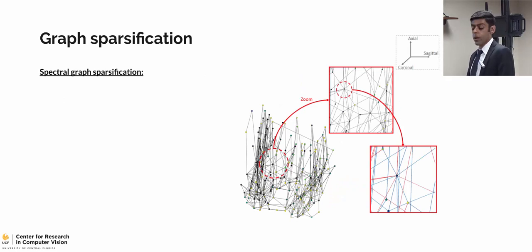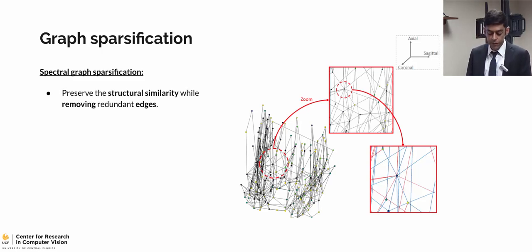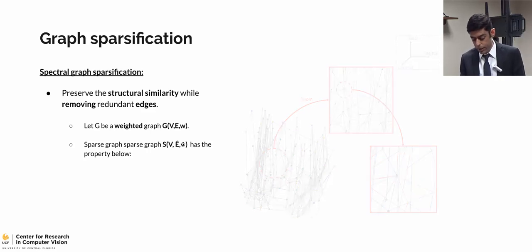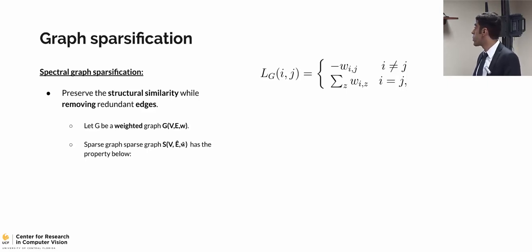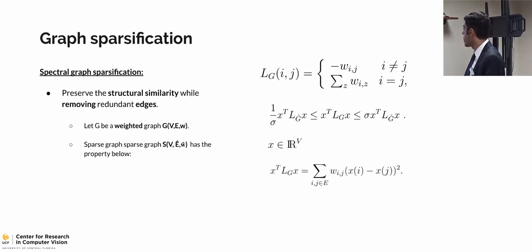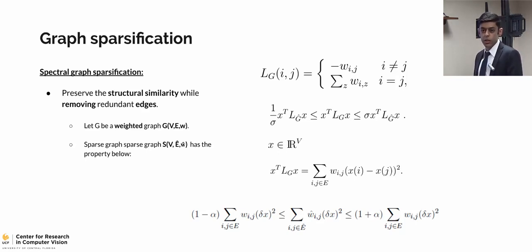Once we deal with sparsification and clustering, we have a graph with many redundant edges. For that, we propose to use graph sparsification to get rid of redundant edges. Spectral graph sparsification removes redundant edges while keeping the structure of the graph. Given a weighted graph G, the sparse graph S should satisfy: assuming the Laplacian matrix of G is defined as follows, G-hat is defined to be in sigma spectral similarity of G. Expanding this equation, we get a sparsified graph S based on a matrix alpha, the sparsification matrix which controls how loose we want the sparsification to be.